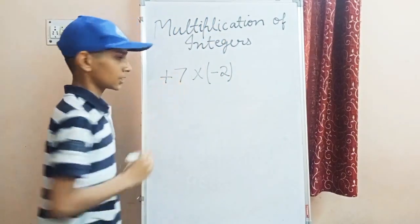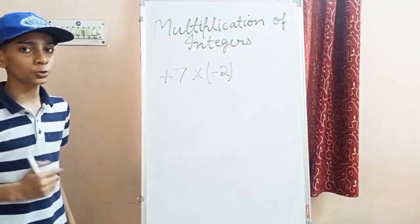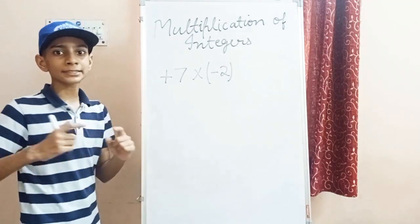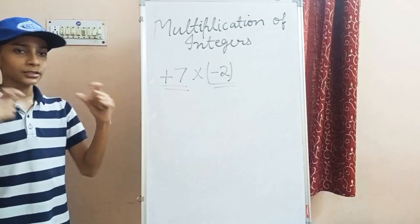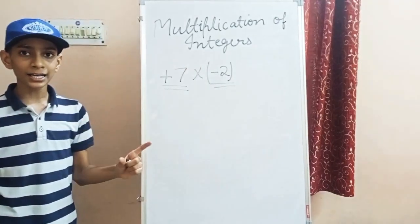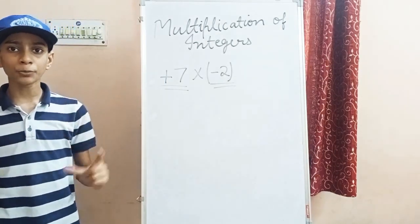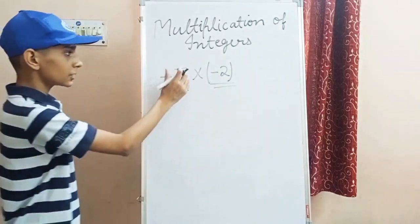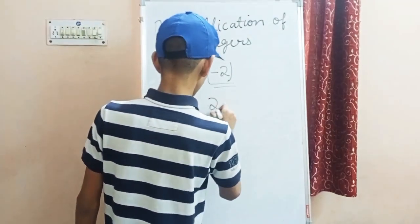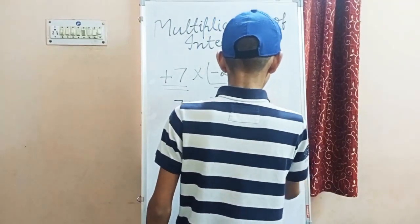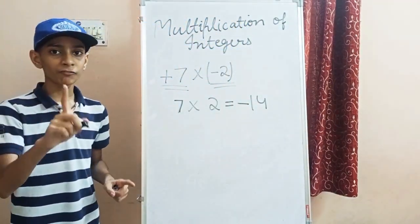There are two rules in multiplication of integers. Rule 1: when we are finding the product and the signs are unlike — meaning one number has a plus sign and the other has a minus sign — we simply remove the plus and minus signs, take out the absolute value of both numbers, and multiply them. So 7 into 2 equals 14. Then, because the signs are unlike, we put a minus sign in the answer.